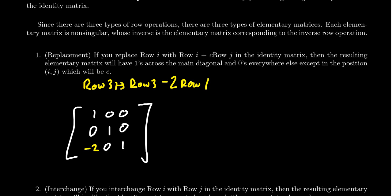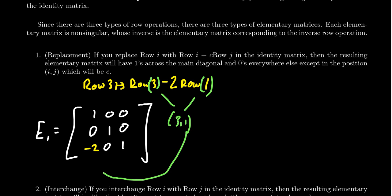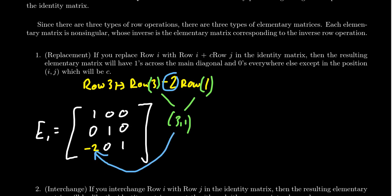That would make it a negative 2 at the 3,1 position. Let's call this elementary matrix E1 for later reference. In general, for a replacement operation at row i from row j, the scalar c goes into the i,j position of the identity matrix. So the negative 2 goes into the 3,1 position of the identity matrix, giving us a typical replacement elementary matrix.